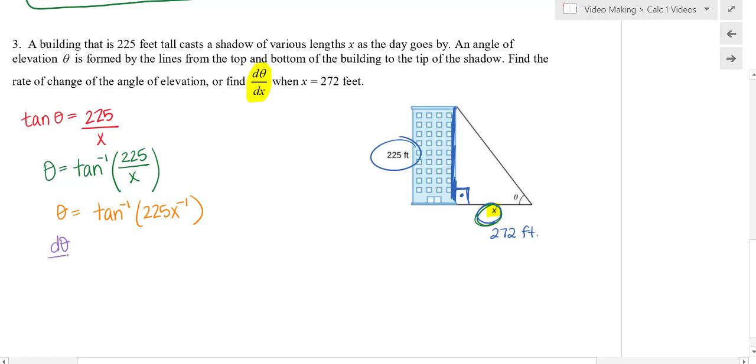This is d theta dx, just like when we had y equals 5x squared. This was dy dx because it's the derivative of y with respect to x because that's what's on the other side. So the same thing will apply now. Now I have theta, right, so it's d theta, and I have x's on the other side. So this is d theta dx equals derivative of inverse tangent of an argument is going to be the derivative of this argument, which is negative 225 x to the negative 2, power rule, over 1 plus this argument squared.